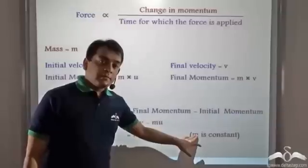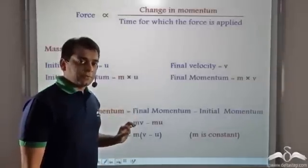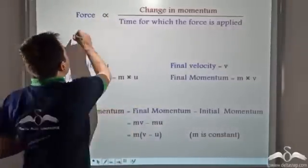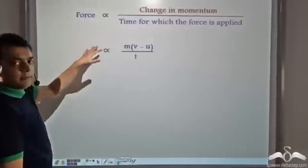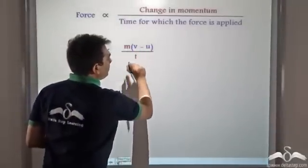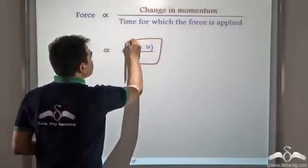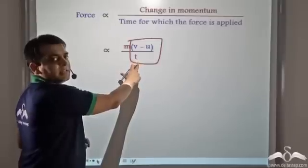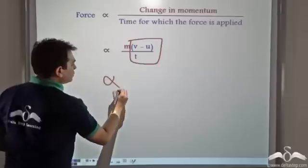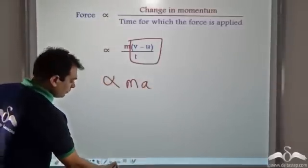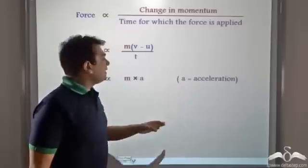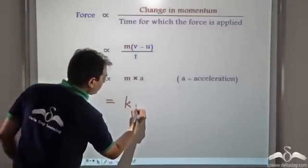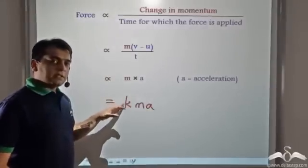Notice that M is constant here — the mass of the object is constant; only its velocity is changing. So we have change in momentum as M(V − U). Substituting this, force is directly proportional to M(V − U) divided by T. Now, (V − U)/T is change in velocity per unit time — that is, rate of change of velocity, which is acceleration A. So this equals M into A. Therefore, force is directly proportional to mass into acceleration, or we could write force equals K·Ma, where K is the constant of proportionality.